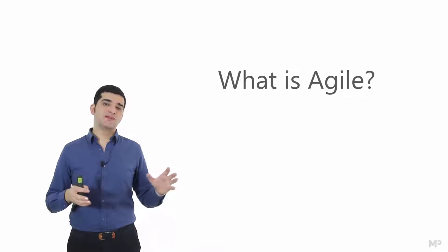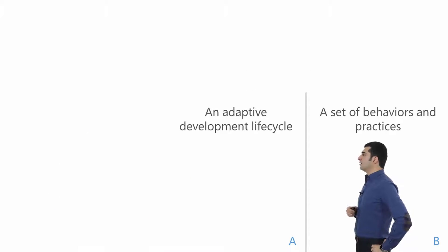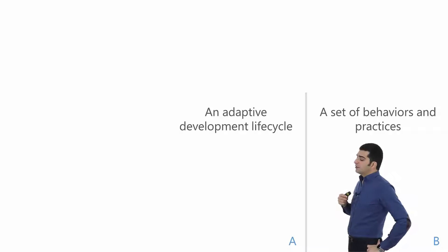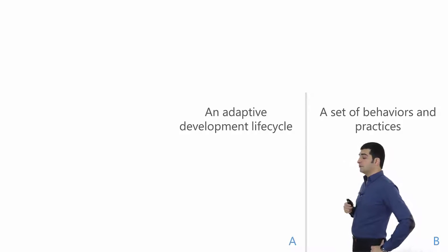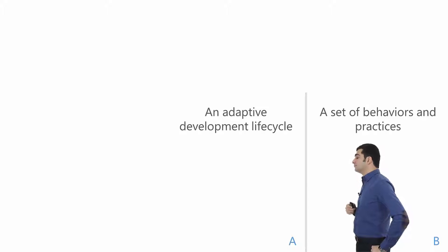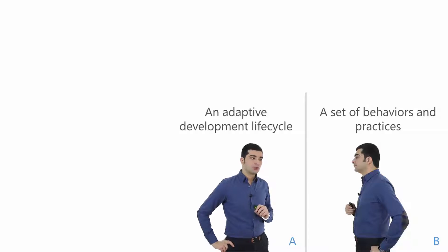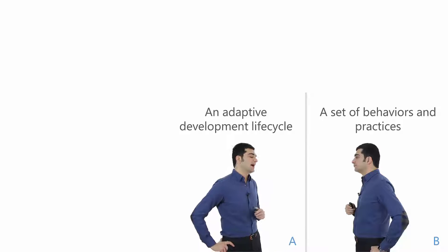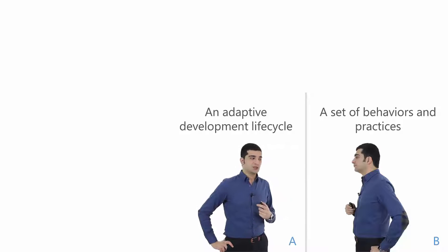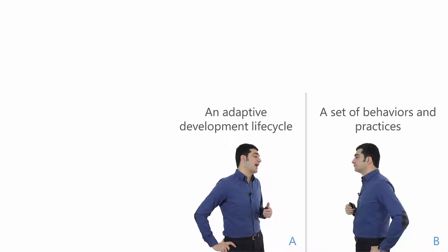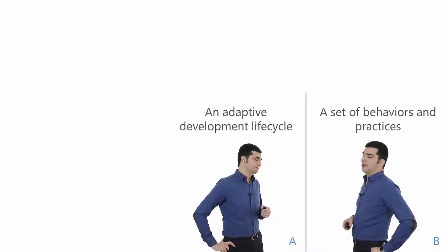There are two types of people when it comes to defining agility. First: agility is a set of behaviors and practices commonly referred to as agile, and when you use them you are agile. Second: agility is the use of a certain approach in developing your product called adaptive — when you're adaptive you're agile — and in order to support your adaptation you need to use certain behaviors and practices, but they are not agile themselves.